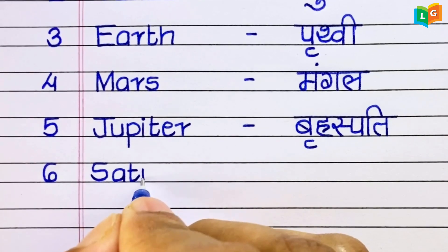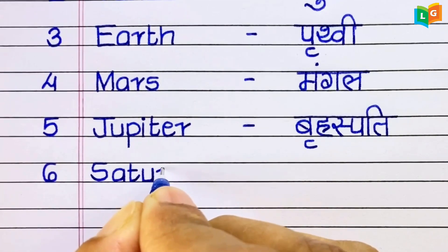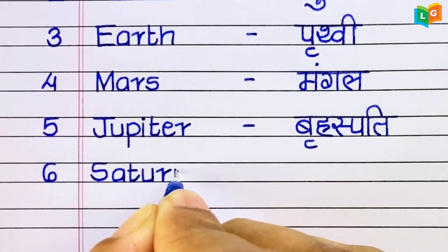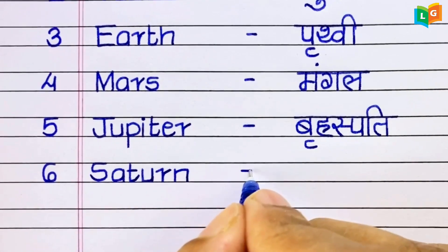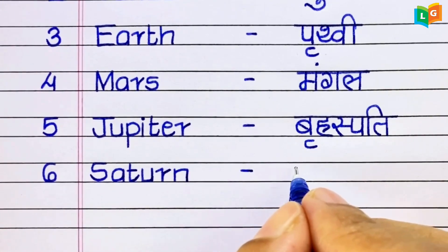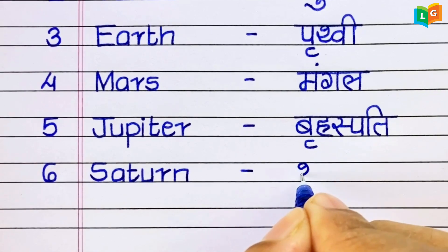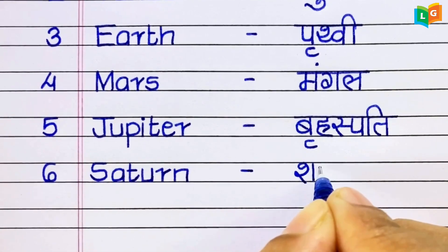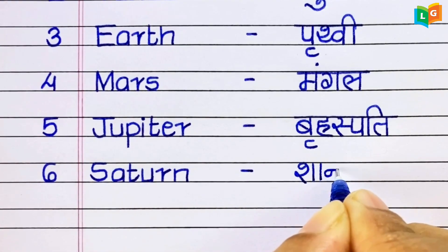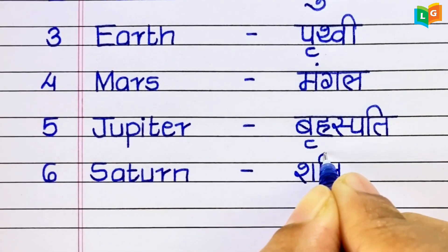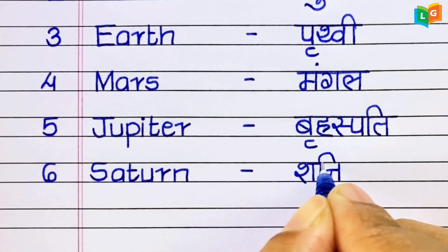Next, S-A-T-U-R-N, Saturn. Saturn means Shani Graha.